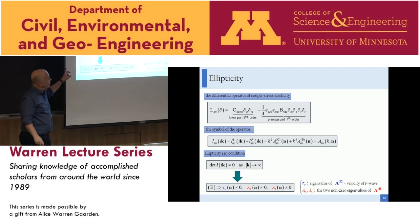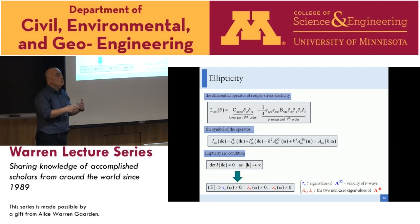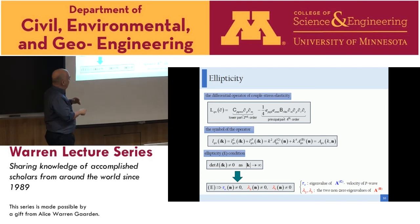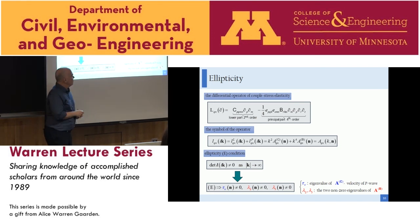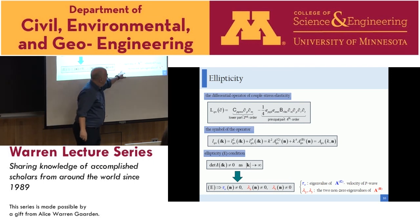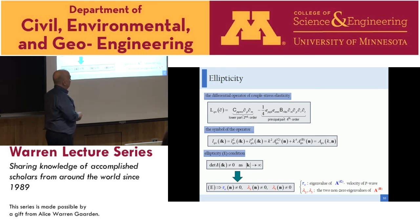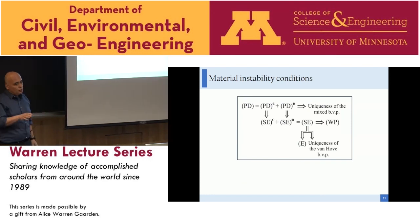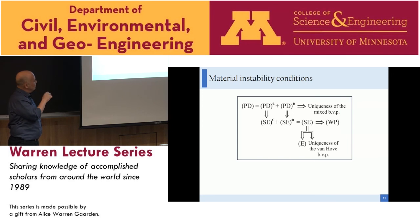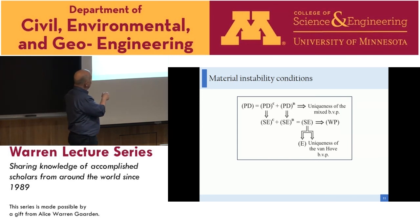The interesting result is that there is no connection between wave propagation and ellipticity in this material. A wave can propagate while the material is not elliptic, or the material can be elliptic but waves do not propagate. This is in contrast with what happens in classical elasticity. The ellipticity conditions require one nonzero eigenvalue of the classical acoustic tensor and two nonzero eigenvalues of the B part of the operator.